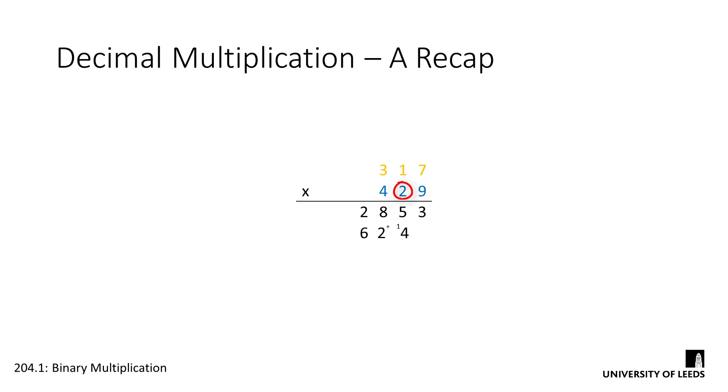Except this time we left shift the result one place. Each of these parts of the final result is known as a partial product. We continue this process of multiplying and left shifting for all remaining digits of the multiplier and end up with a cascade of partial products.